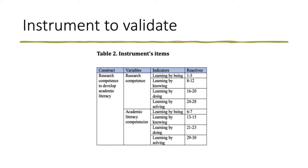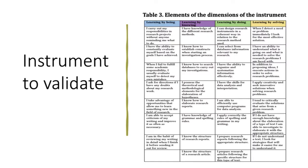The instrument to validate presented here has the construct 'research competence to develop academic literacy,' with two variables: research competence and academic literacy competencies. We have four indicators for each variable: learning by being, learning by knowing, learning by doing, and learning by solving. You can see the reactives for each indicator.